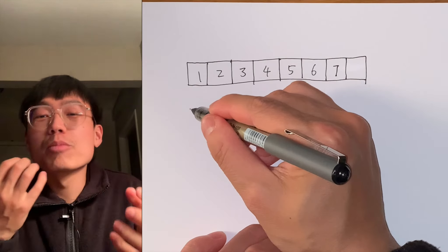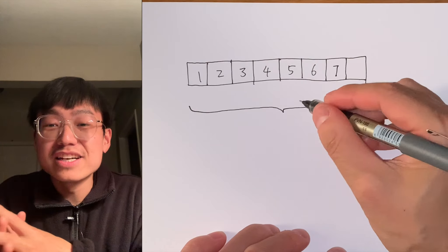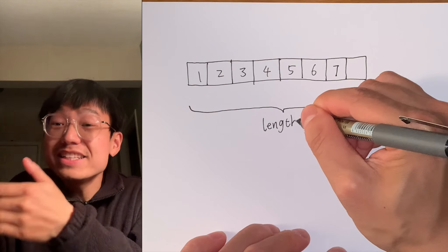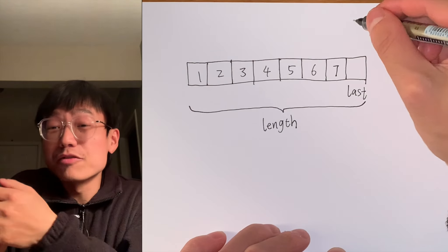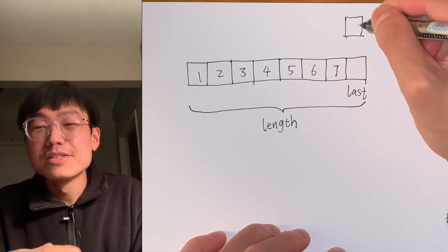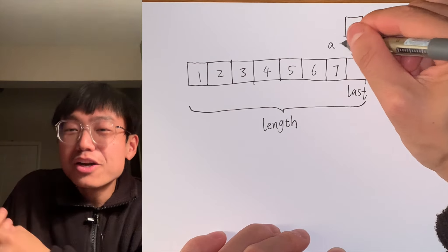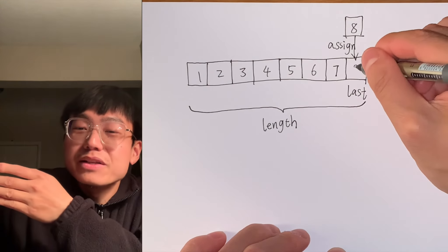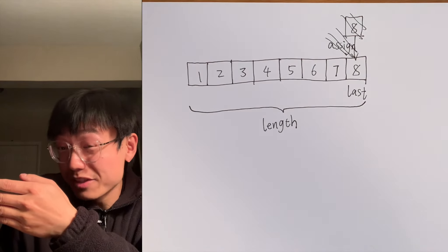Let's talk about inserting at the end of the array, because it is so easy. At any point in time, we know the index of the last element of the array, as we keep track of it in our length variable. So for inserting an element at the end, all we need to do is assign a new element to one index past the current last element.